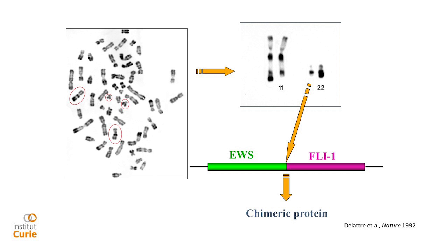I will end with some new data on genes that are induced by EWS-FLI1 that may be interesting for immunotherapy. The main genetic alteration observed in all Ewing sarcoma is a translocation between EWS and usually FLI1, but it can also be other members of the ETS family, like ERG or ETV. The main one is EWS-FLI1, so I will mostly speak about that.